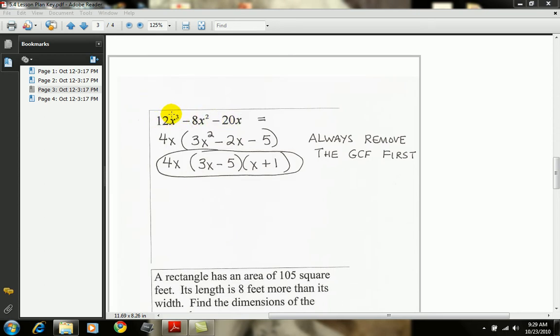The first step in this factoring problem is to take out the GCF, which in this case would be 4x. It's the largest algebraic expression that comes out of all three terms.